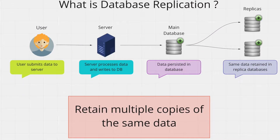Database replication means retaining multiple copies of the same data — you keep the same data in multiple databases. These databases that keep copies of your data are called replicas. You can read data from these replicas, and you can also recover data from a replica if your master database gets destroyed.